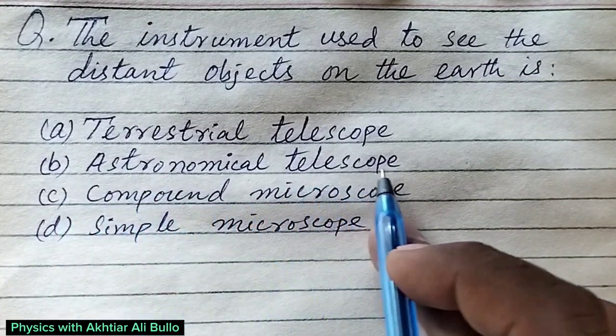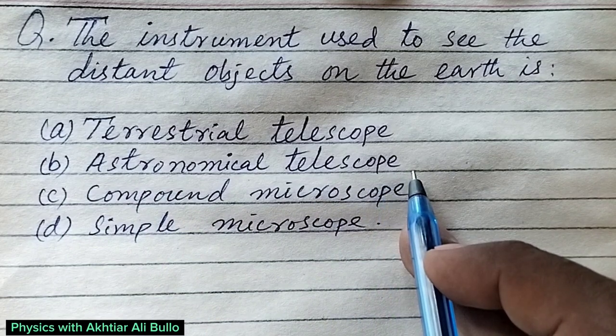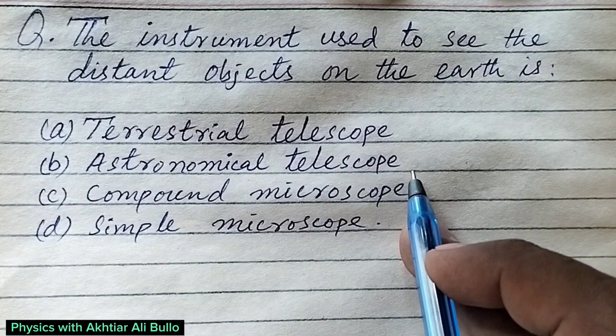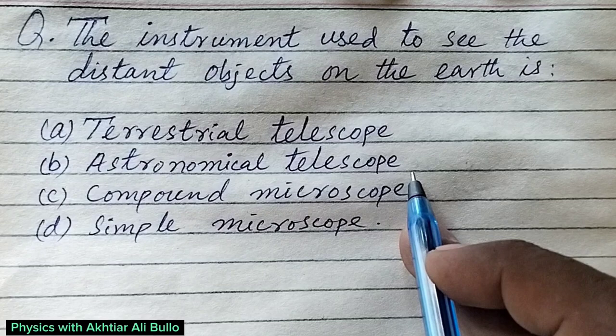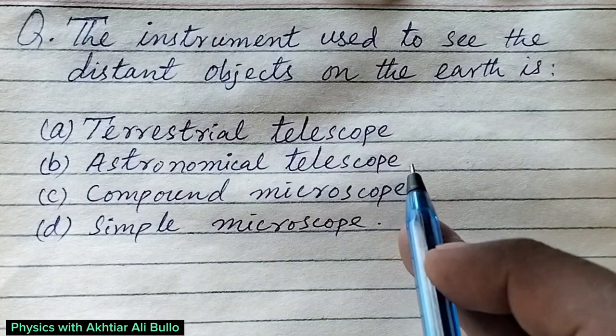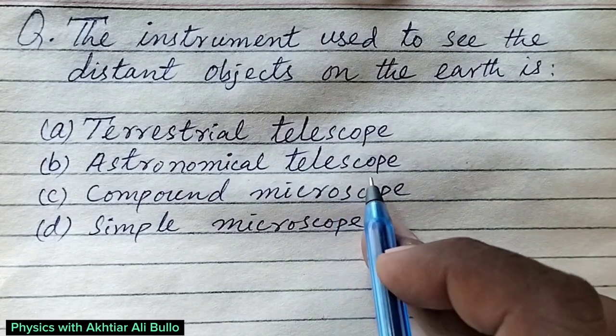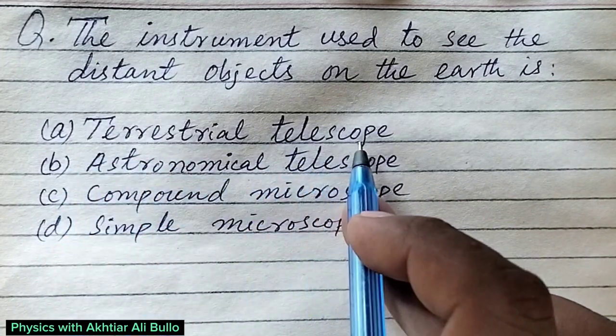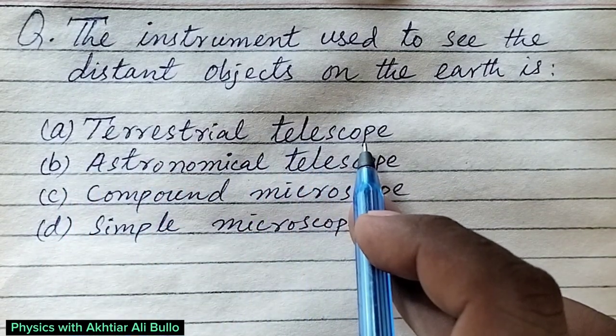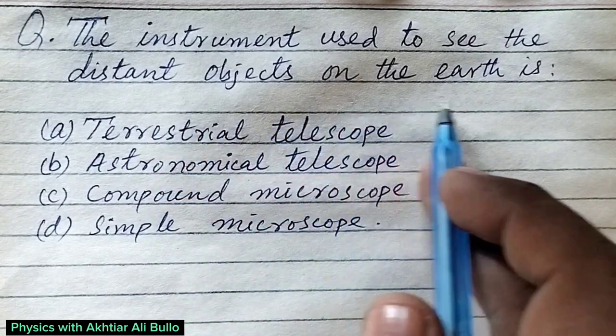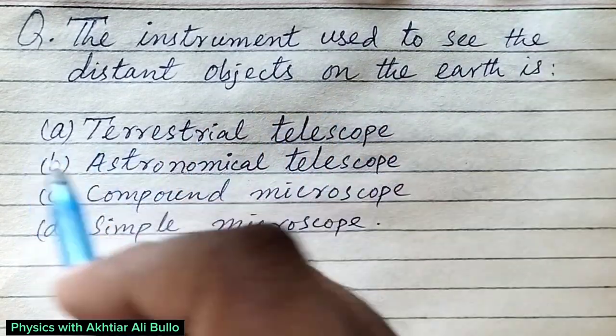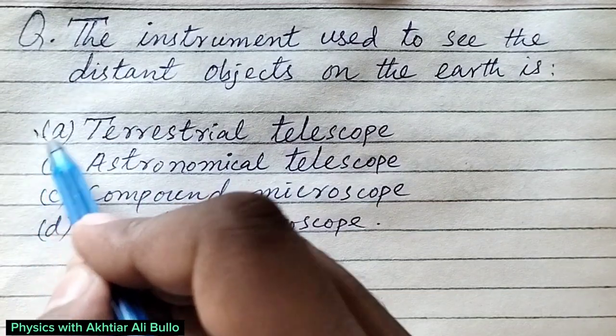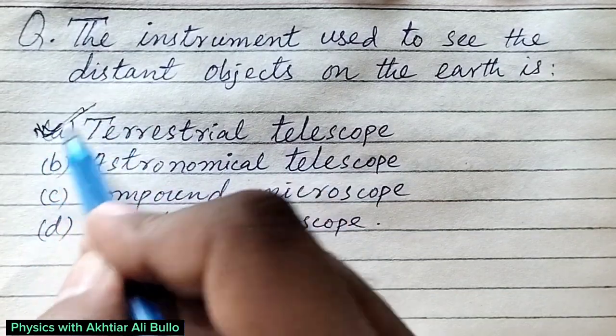And Astronomical Telescope is used to see the objects in the astronomy, means from Earth to astronomy. And Terrestrial Telescope is used to see the distant objects on the Earth. So, the correct option will be A. Terrestrial Telescope.